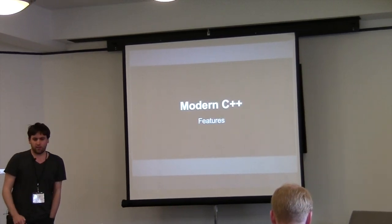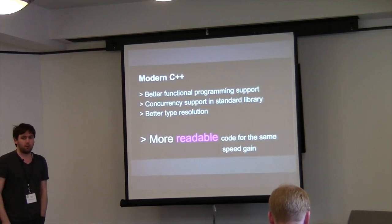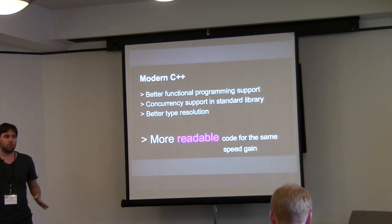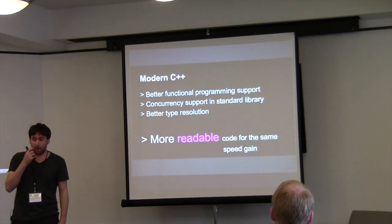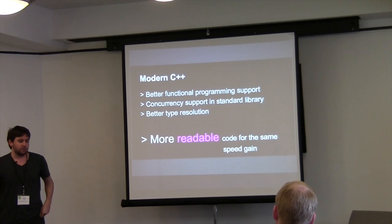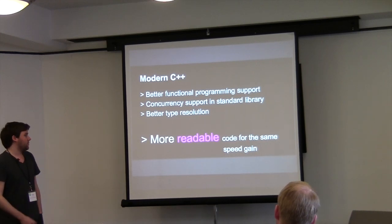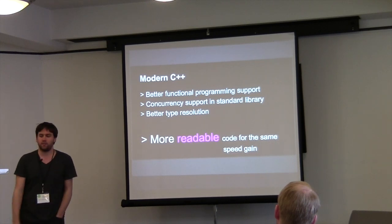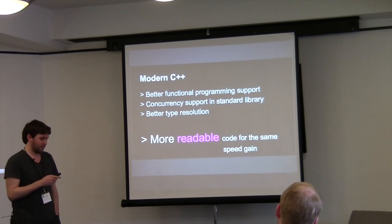First, modern C++. We have better functional programming support. Concurrency is now in the standard library, which is a very good feature. The type resolution, the auto keyword, the declaration type compile-time function — these are good features. In the end, we now have more readable code for the same performance gain, which is nice, and this is what I love about C++.